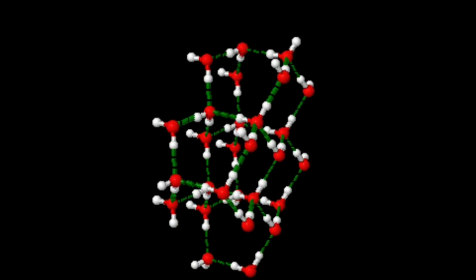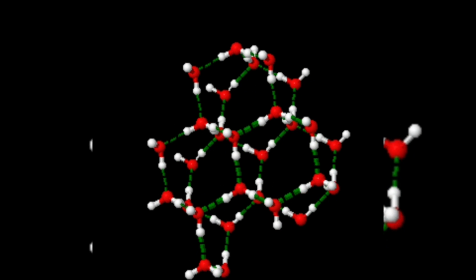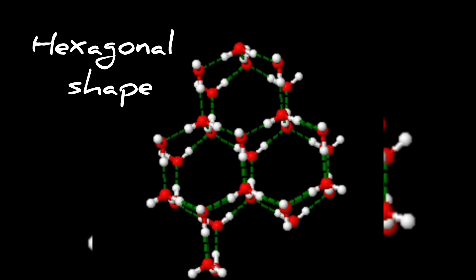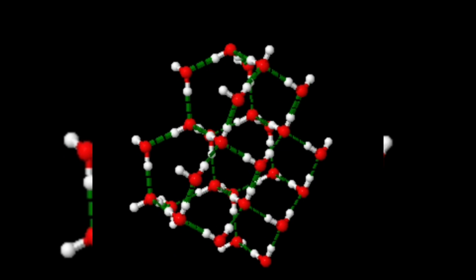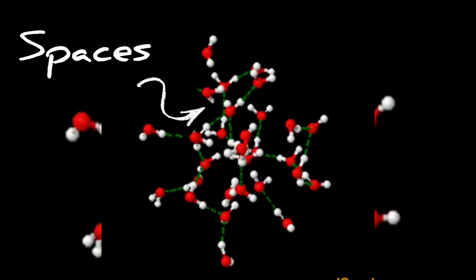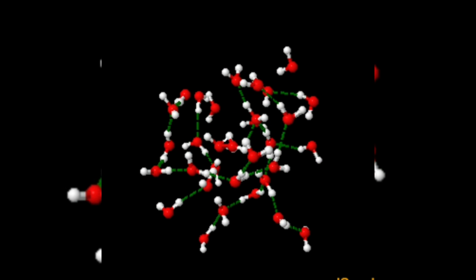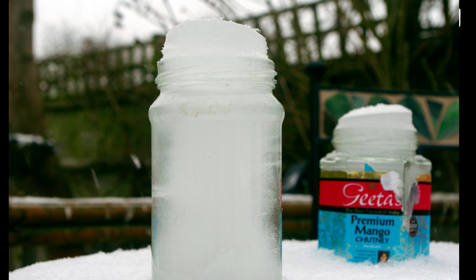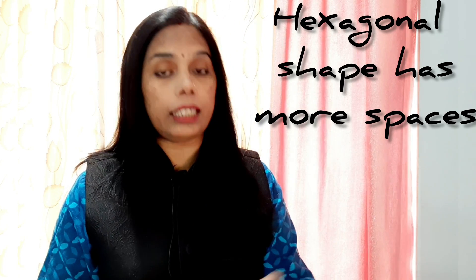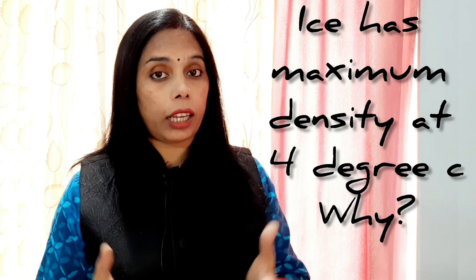In freezing, water molecules arrange themselves in a rigid hexagonal shape at atmospheric pressure, due to which its shape becomes cage-like and there are spaces, as we can see here. Whereas water molecules remain in a linear shape. That's why water expands after freezing. When we compare the intermolecular space between the hexagonal shape of ice and the linear shape of water, in the hexagonal shape more spaces are there — more space means less density, and less density means it will float. That's why ice floats on water.